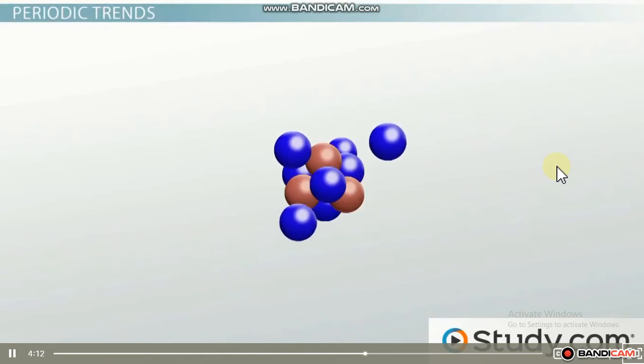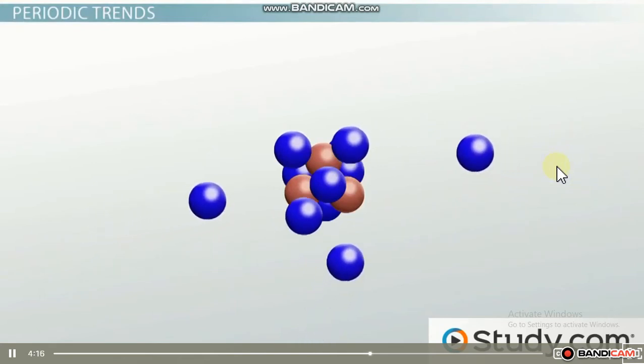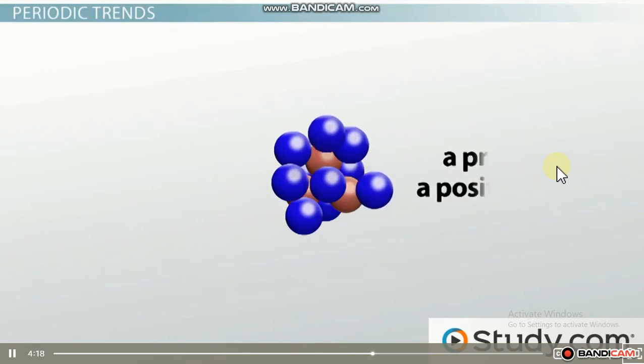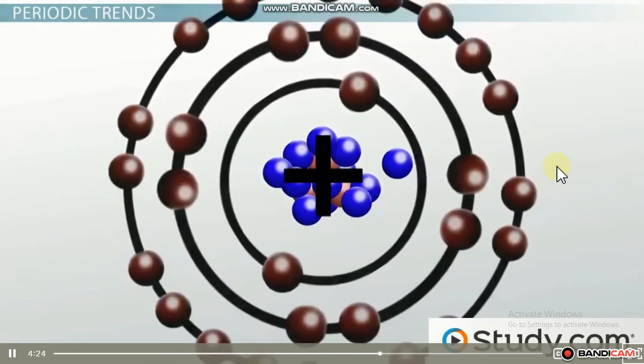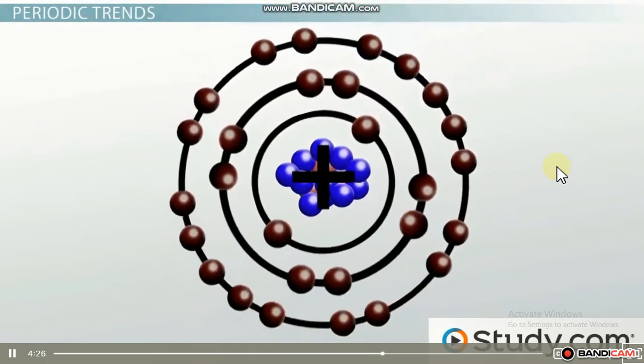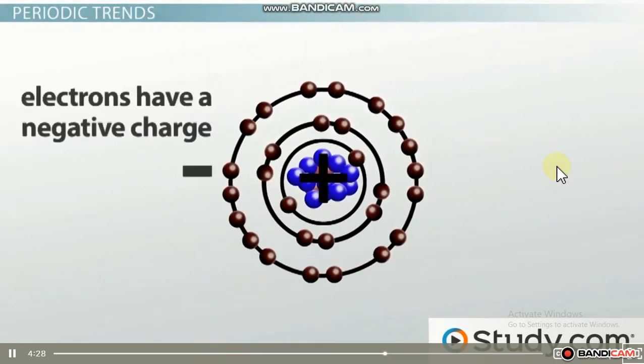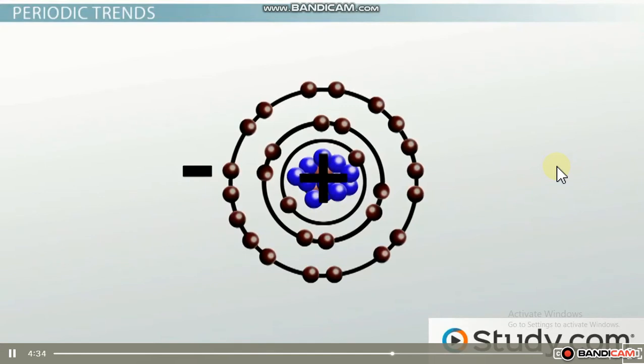Well, it gains more neutrons too, but they won't matter in this situation. The added protons are important here because a proton has a positive charge. As this positive charge in the nucleus increases, it will increase the pull of the outer electrons because electrons have a negative charge. A very positive nucleus is going to pull in outer electrons more than a less positive nucleus.